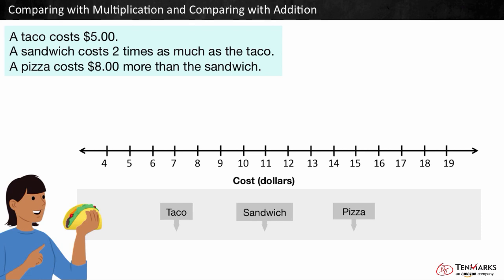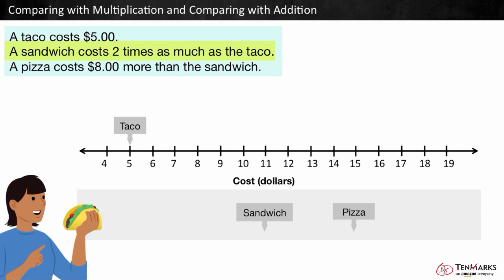First we can drag the taco to the five because we know it is five dollars. The sandwich costs two times as much as a taco. Will we add or multiply to find the cost of the sandwich? Two times as much is like doubling an amount, so we multiply.